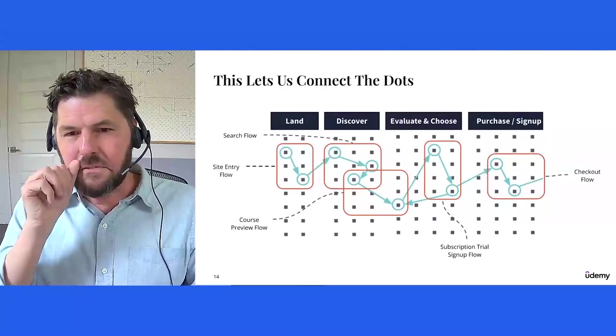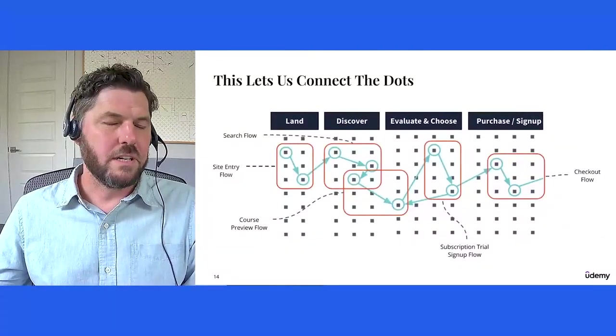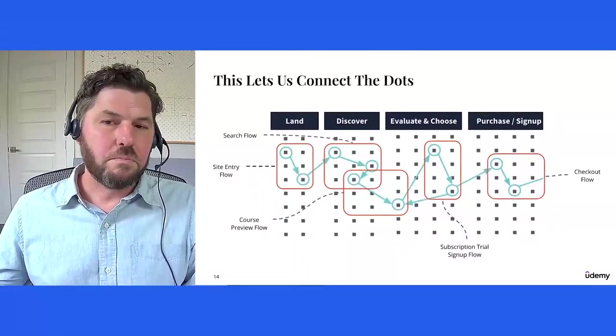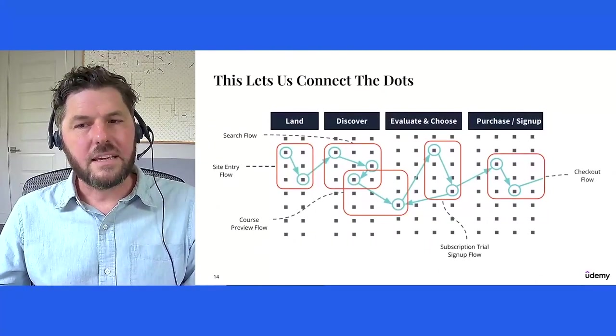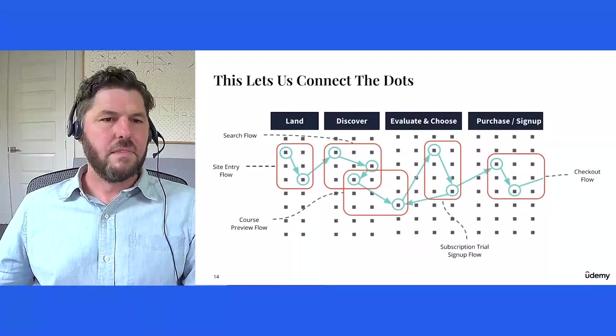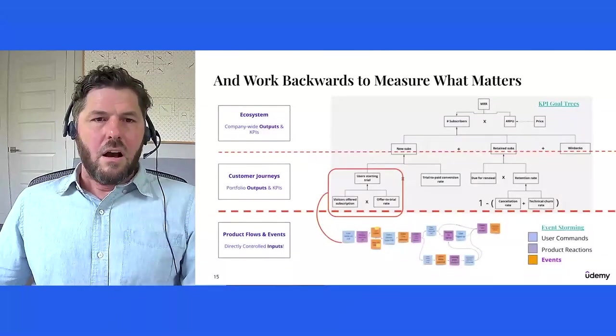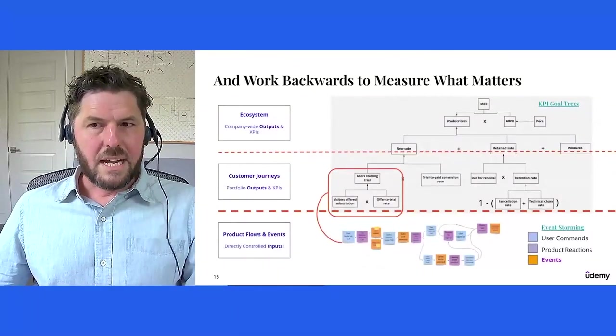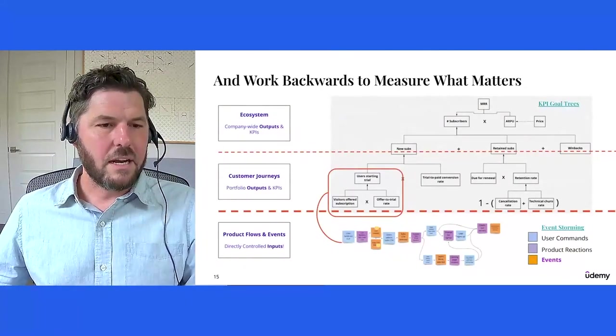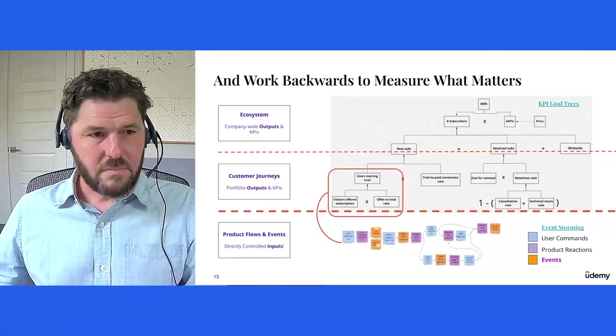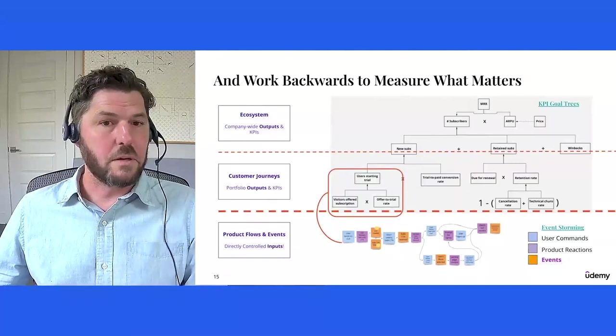Using amplitude, we can connect these dots to understand how our inputs are working and how they ladder up to the outputs that we care about. And not only for me, but for all of our customers. So recall that we can define meaningful outputs, KPIs, lagging metrics for each phase of the customer journey, and then for higher level business goals. And our product flows and events are the inputs that we directly control to influence our desired outputs. So based on this, a few other tools that we use are KPI goal trees or driver trees and event storming. And this lets us work backwards from the outputs that we ultimately care about at a high level in the business to the inputs that our product teams are working on delivering to our customers in a customer-centric way, increasingly.